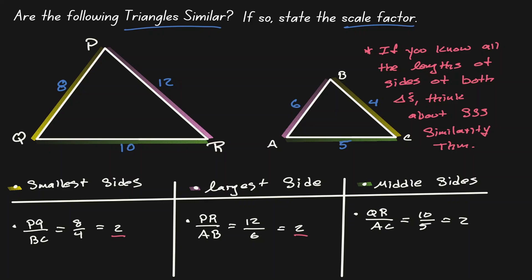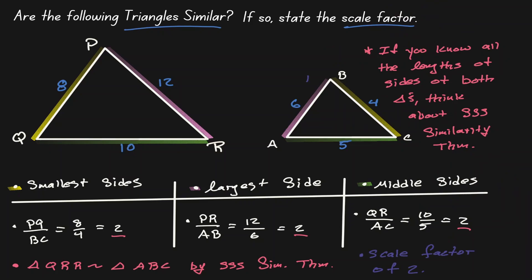Notice that all proportions have a value of 2, implying that all sides are proportional to each other. Therefore by side-side-side similarity, we can claim that these two triangles are similar, and the scale factor is a value of 2. Notice that when we were creating our proportions, all the numerators came from the same triangle and all denominators in our proportions came from the same triangle. So there has to be order in our comparison.